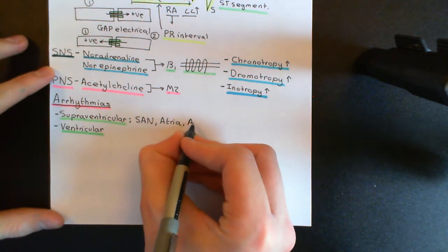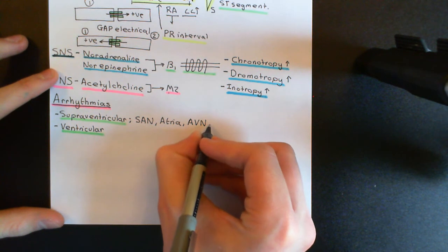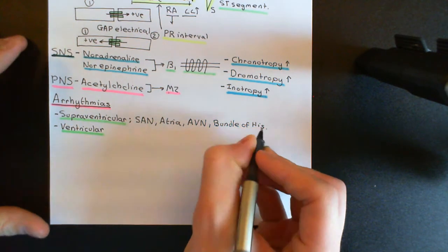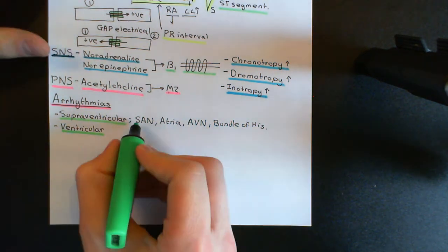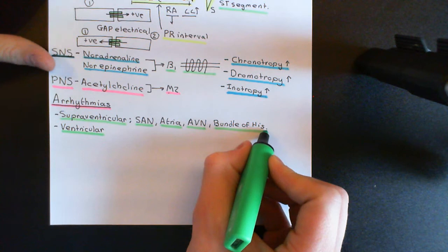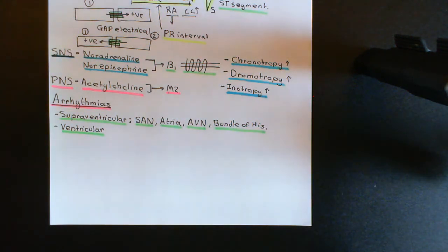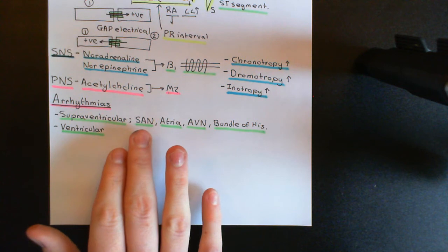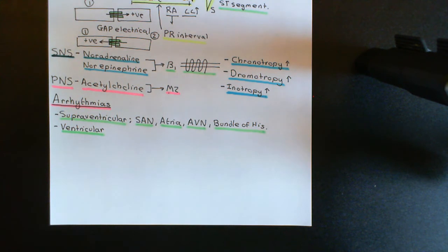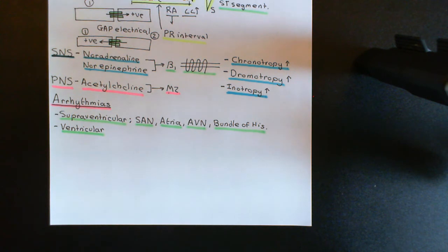Or if the problem is originating in the atrioventricular node or even the bundle of His, we will still classify it as a supraventricular arrhythmia. What all of these arrhythmias have in common is that the QRS complex generally looks normal on the ECG of a patient with a supraventricular arrhythmia. If there's some problem with electrical signal conduction in the sinoatrial node, the atria, the atrioventricular node, or the bundle of His, provided that the signal is still getting down to the ventricles - which it usually is - once it actually gets to the ventricles and goes down the bundle branches, the QRS complex will be normal because ventricular conduction is absolutely fine.